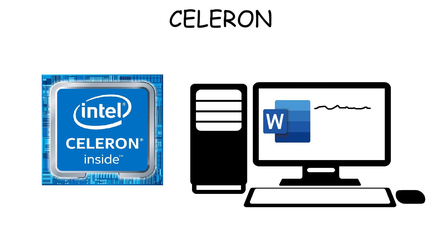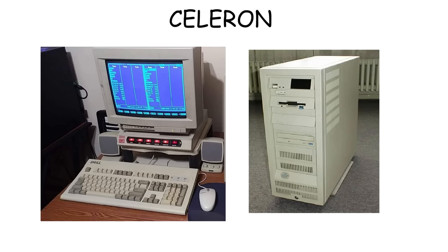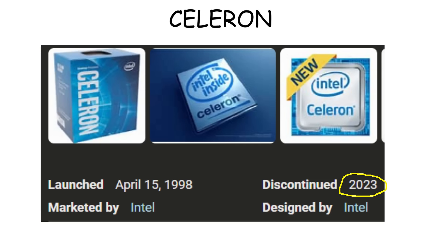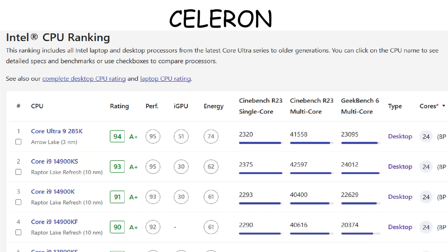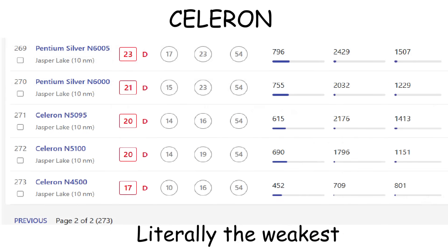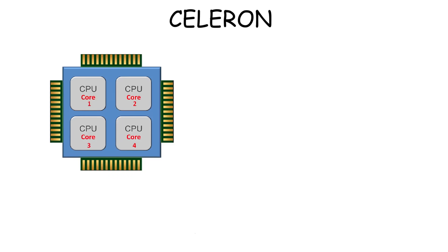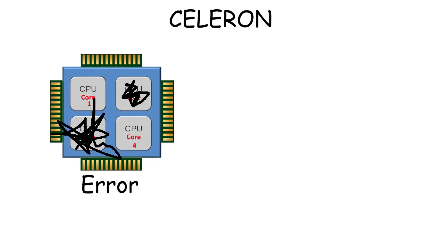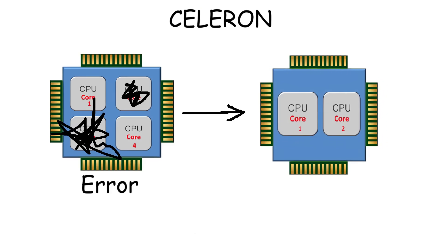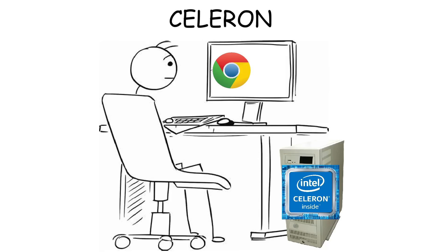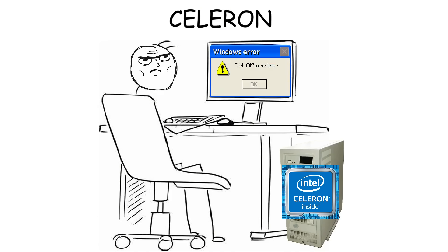Intel Celeron was Intel's weakest processor series, literally made for really basic tasks like typing documents. It was mostly used in cheap laptops and office PCs back in the early 2000s, but Intel officially discontinued it in 2023 since nobody's really using this weak CPU anymore. In CPU benchmark rankings of 273 Intel processors, the Intel Celeron series sits at the very bottom. The reason it's so weak is because it was originally Intel's normal chip, but it came with defects and errors, so Intel disabled those defective cores to make them function normally and called it Celeron. That's why if you open one browser tab with Celeron everything's fine, but the moment you open two, the whole system starts to lag.